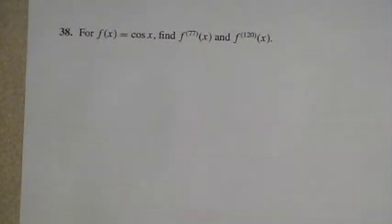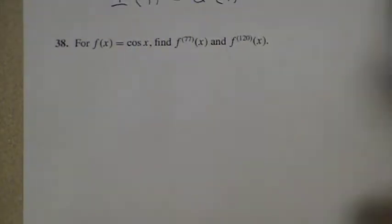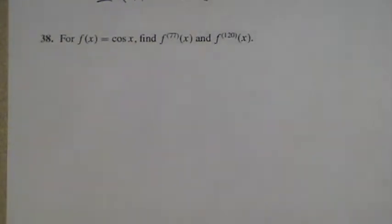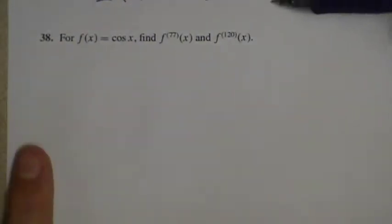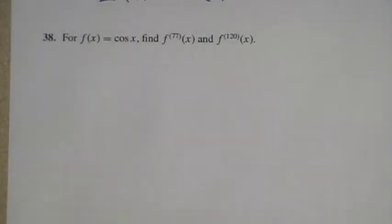In this video, we'll take a quick look at problem number 38 from section 2-6. And this is something that seems ridiculous when you first read the question. We have a function, cosine of x, simple function we've seen it a bunch of times. We want to find the 77th derivative of that function, and we also want to find the 120th derivative of that function.